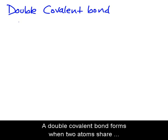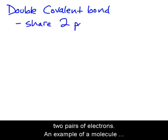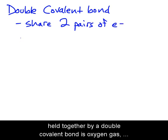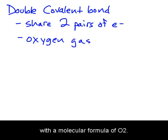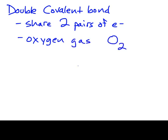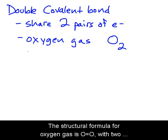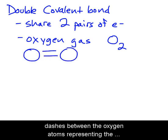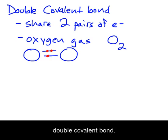A double covalent bond forms when two atoms share two pairs of electrons. An example of a molecule held together by a double covalent bond is oxygen gas, with a molecular formula of O2. The structural formula for oxygen gas is O═O, with two dashes between the oxygen atoms representing the double covalent bond.